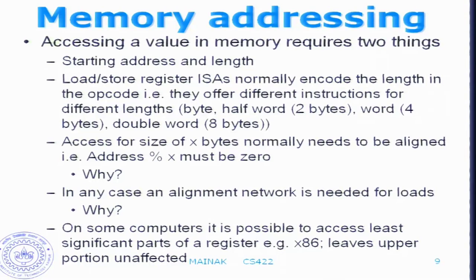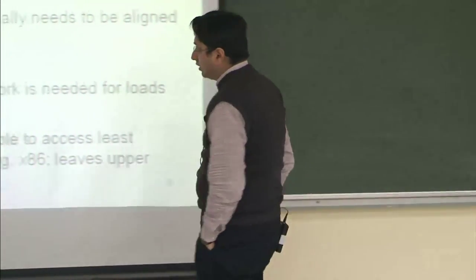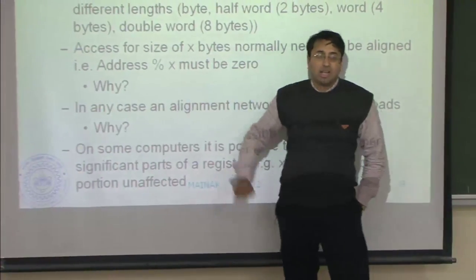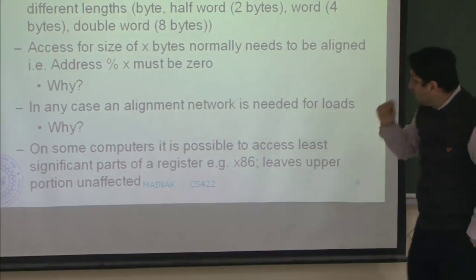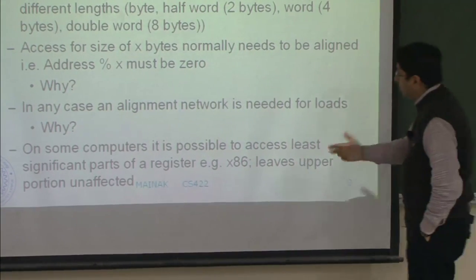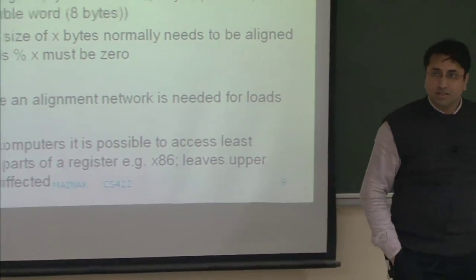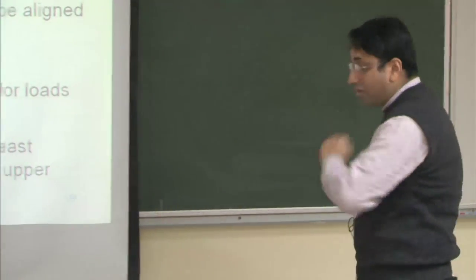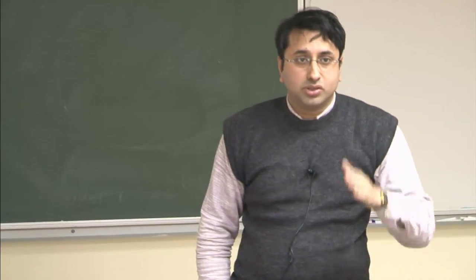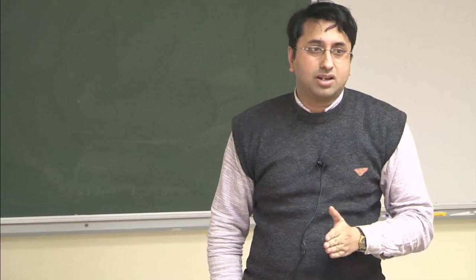Accessing x bytes starting at a given address normally requires that the address modulo x must be zero. This is called an aligned access. If this condition does not hold, that is called a non-aligned access. In most processors — or at least some — this is a requirement. For example, a load word instruction can only start at an address which is a multiple of four. You cannot start at an arbitrary address.